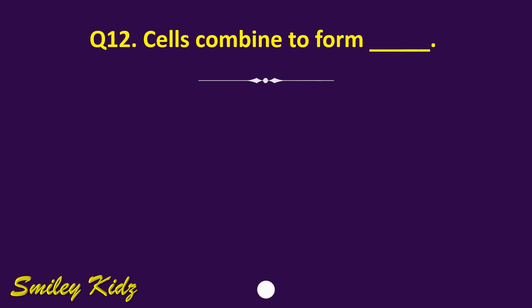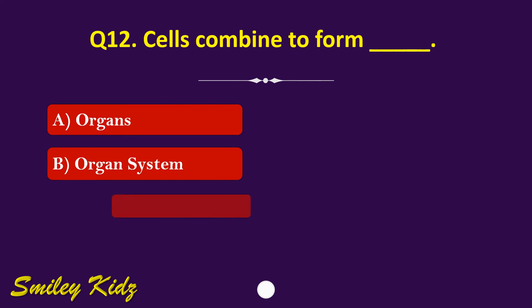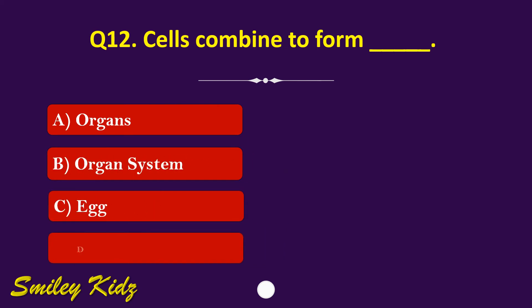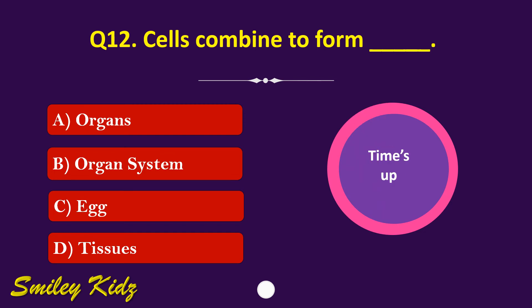Question number 12. Cells combine to form dash. The options are: A. Organs, B. Organ System, C. Egg, or D. Tissues. Your time starts now. Your time is up and the right answer is option D. Tissues. Cells combine to form tissues.